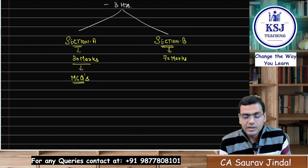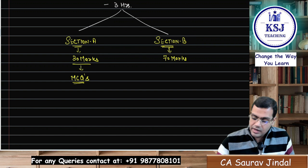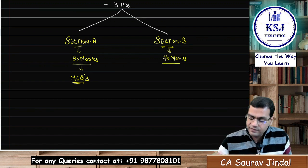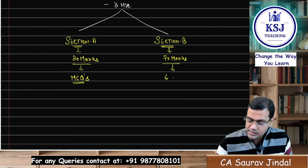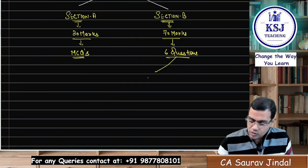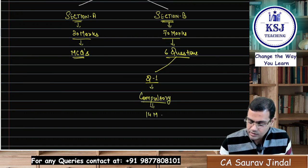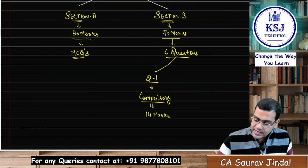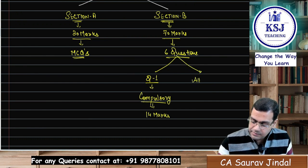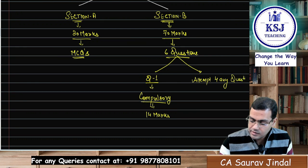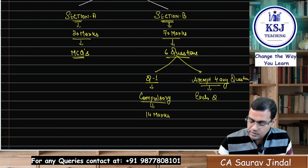Coming to Section B — how is Section B going to be arranged in that 70 marks? Total you will get six questions. In those six questions, question number one will be a compulsory question for 14 marks. Out of the remaining five questions, you have to attempt any four questions.